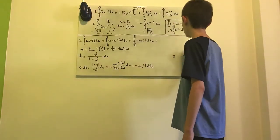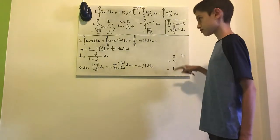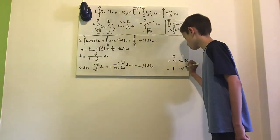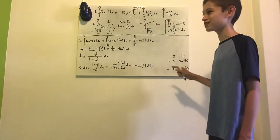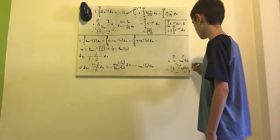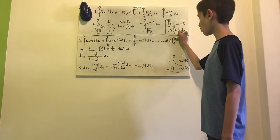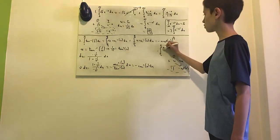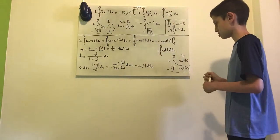We use integration by parts: we differentiate u (giving 1) and integrate cosecant squared of u, which is negative cotangent of u. By the way, when I first worked out this integral I wasted a lot of time because I forgot that the integral of cosecant squared is just negative cotangent. So we get negative u cotangent of u evaluated from pi/6 to pi/4, minus the integral from pi/6 to pi/4 — the minus negatives make it positive — of cotangent of u du.